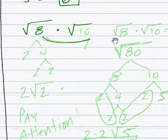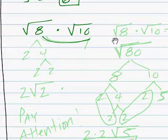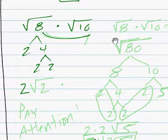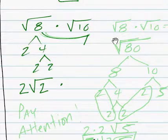Root 8 times root 10. I'll factor it out. 2 times 4, and then 2 times 4. So we get a pair. 2. The square root of 2. Times, then we do the 10 over here. Oh, beg your pardon. We first multiply those two. Pay attention.